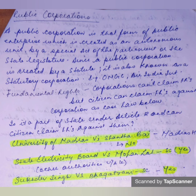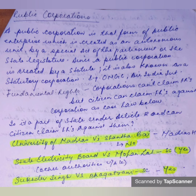A public corporation is that form of public enterprise which is created as an autonomous unit by a special act of the Parliament or the state legislature. Since a public corporation is created by a statute, it is also known as a statutory corporation. Because it is created by statute, a fundamental rights claim can be made against it.